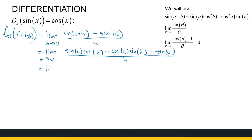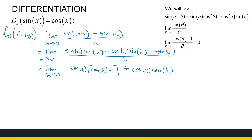We expand sine of x plus h as sine x cosine h plus cosine x sine h, minus sine x, everything over h. Now doing some algebraic manipulation: we take sine x out of the first and last terms as a common factor, giving sine x times cosine h minus one, plus cosine x times sine h, all still over h.